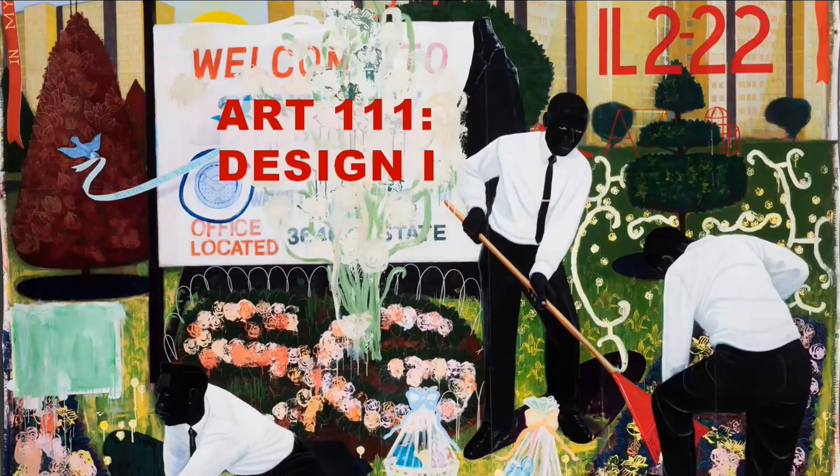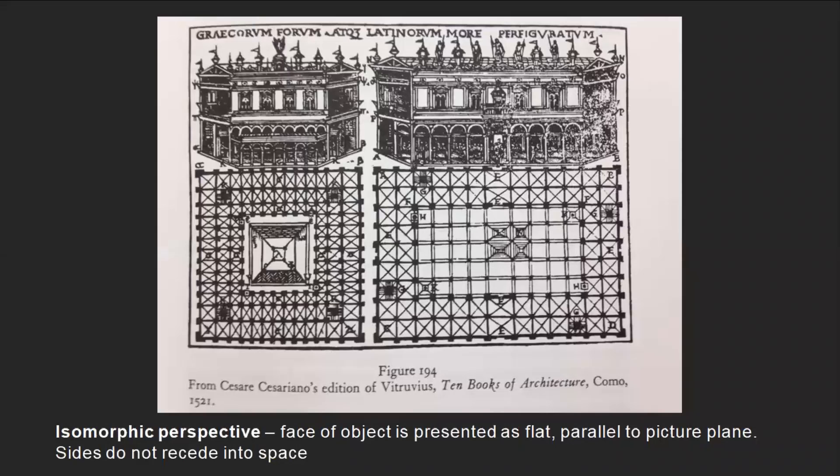Welcome back to Design. Today we're going to be looking at perspective — taking a brief look at how it was developed across time. The first form of perspective was isometric perspective, in which the face of the object is presented as flat, parallel to the picture plane, and the sides do not recede into space.